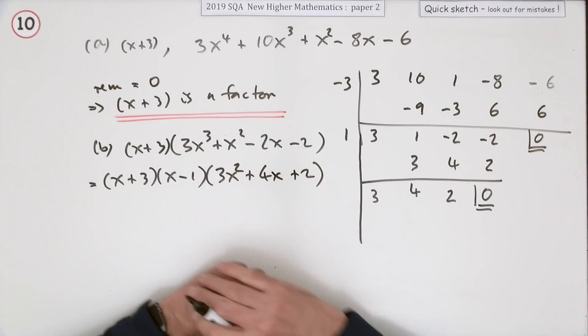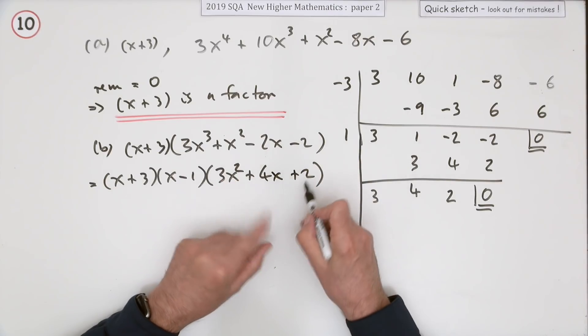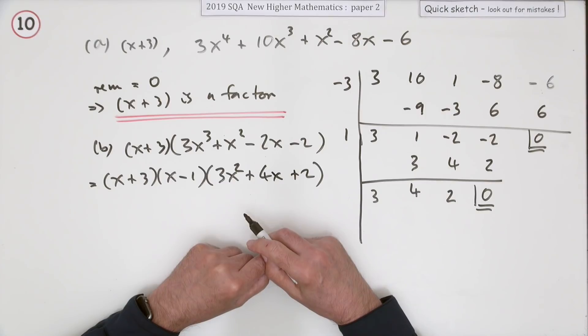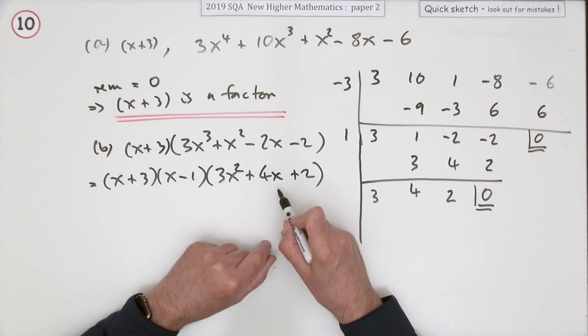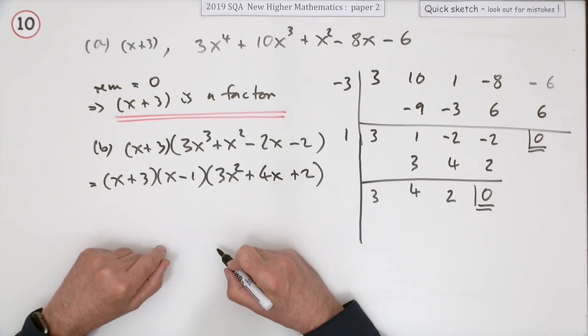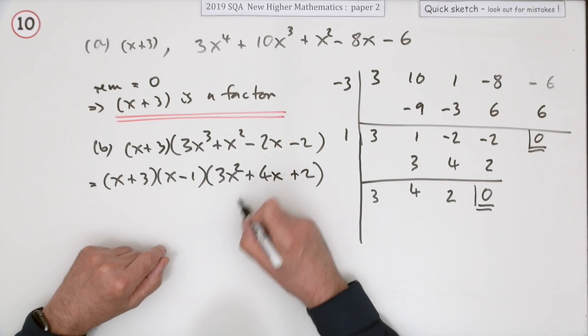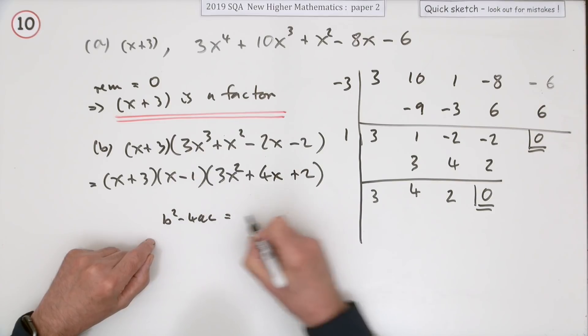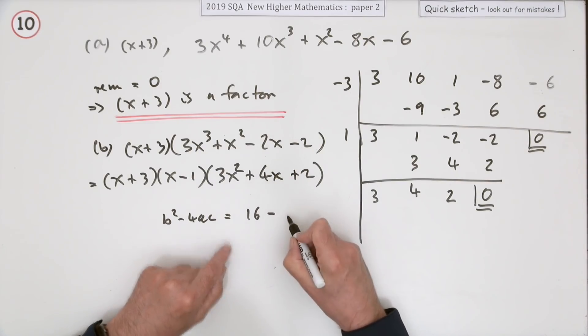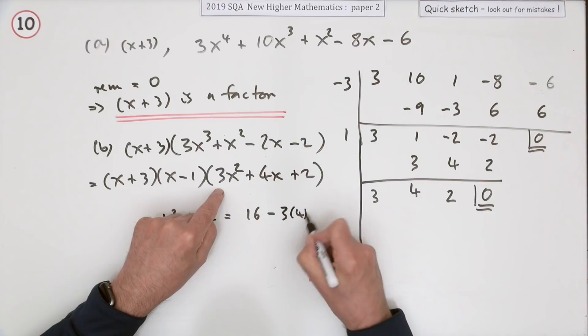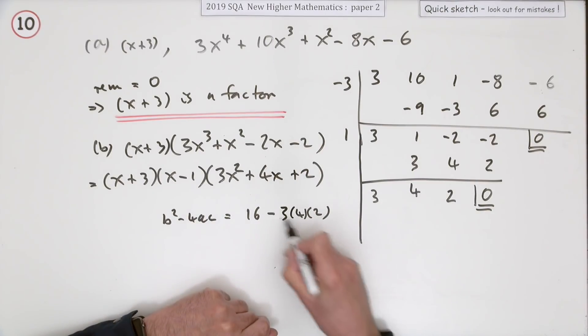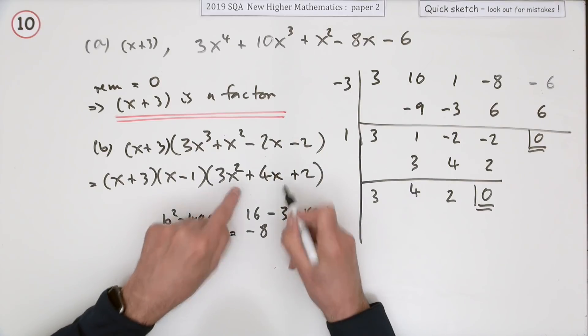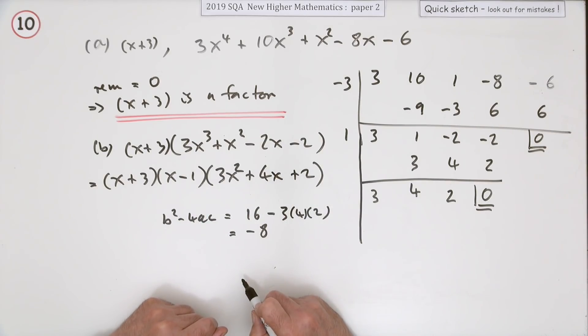Now you can proceed to factorize that. You think, well, multiply to give 2, add to give 4 when one of them's trebled, and you realize it doesn't work. But you can check by working out the discriminant. For this one you've got b²-4ac, which equals 16 minus 3×4×2—that's 24—so that means it comes to -8. So that means this doesn't factorize any further.